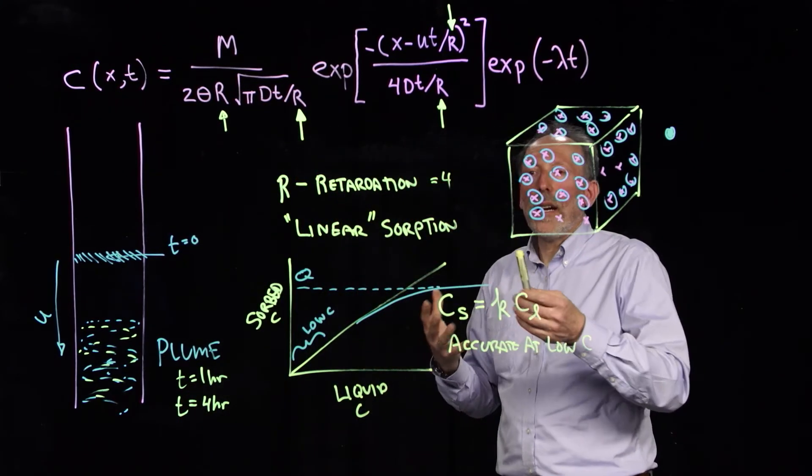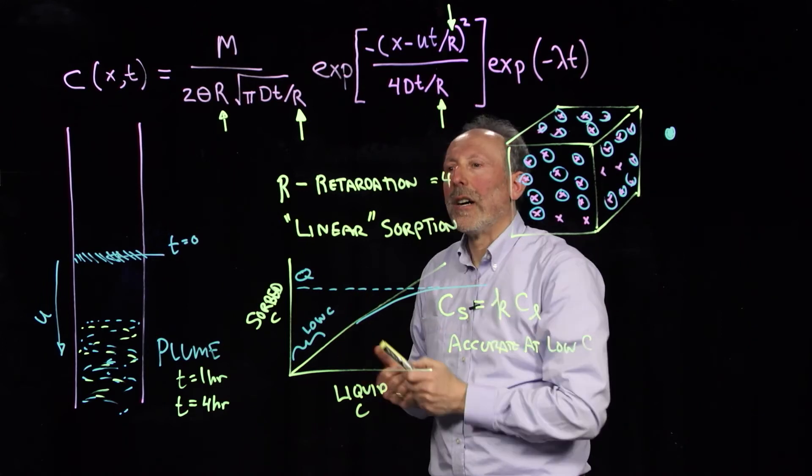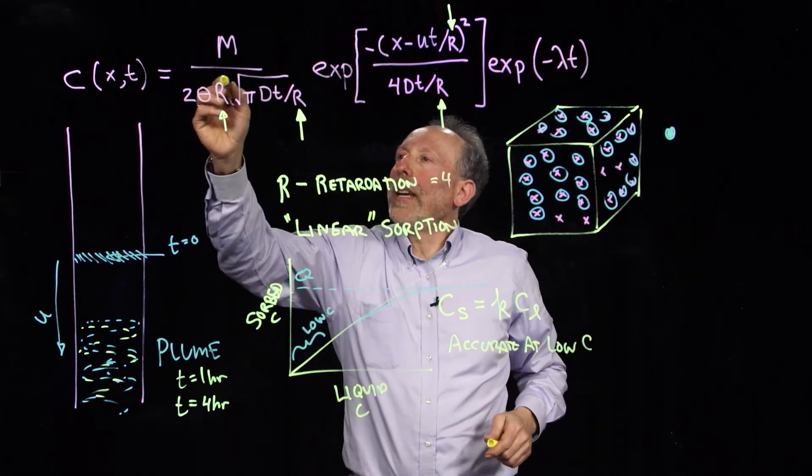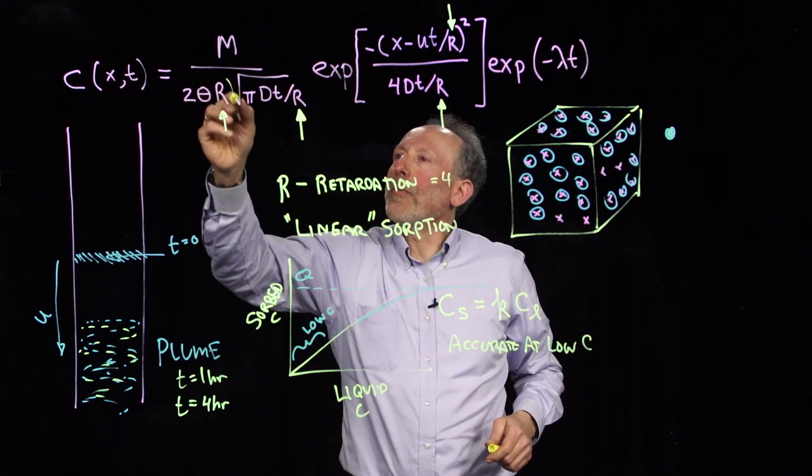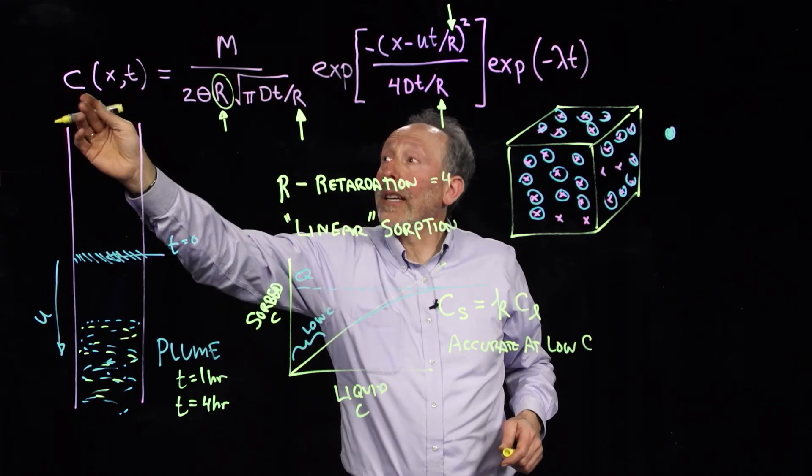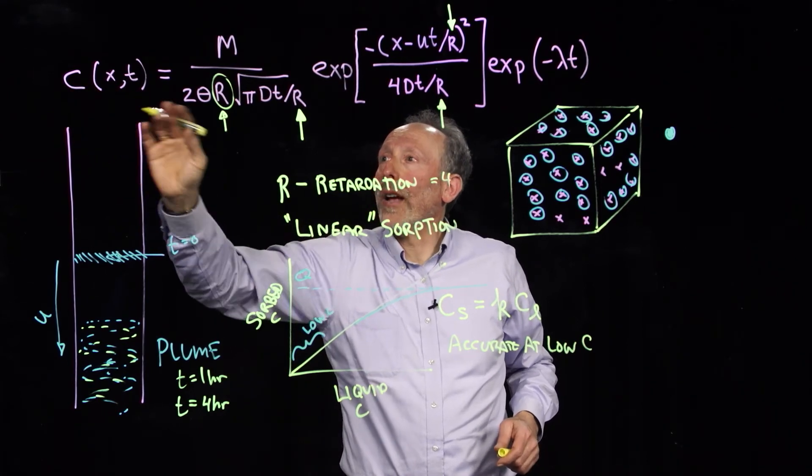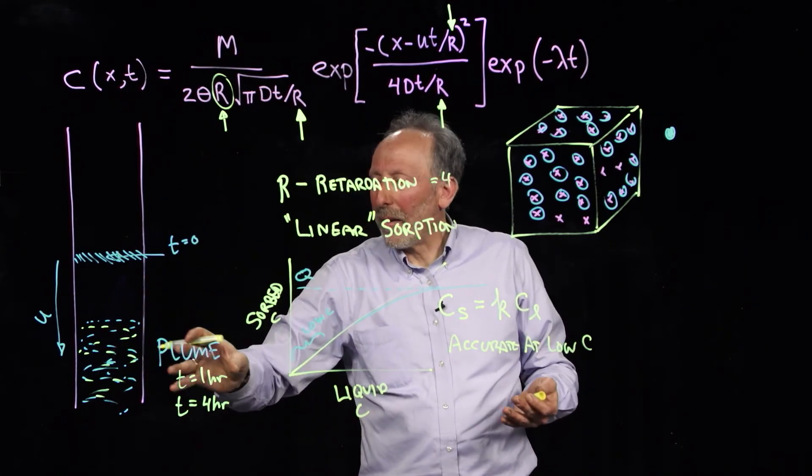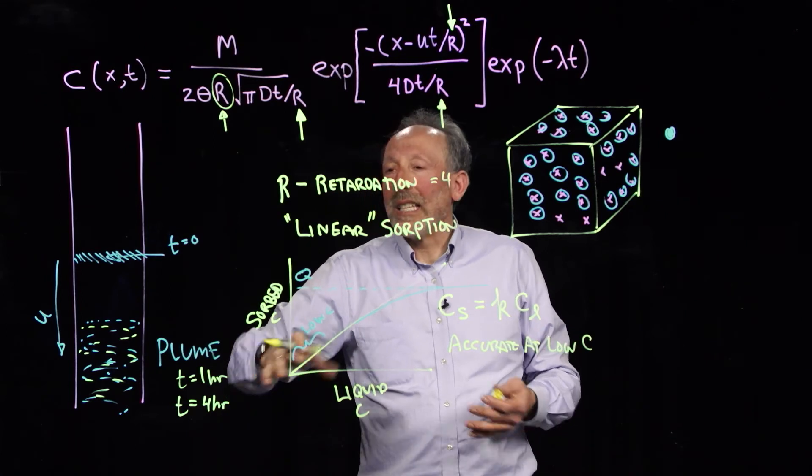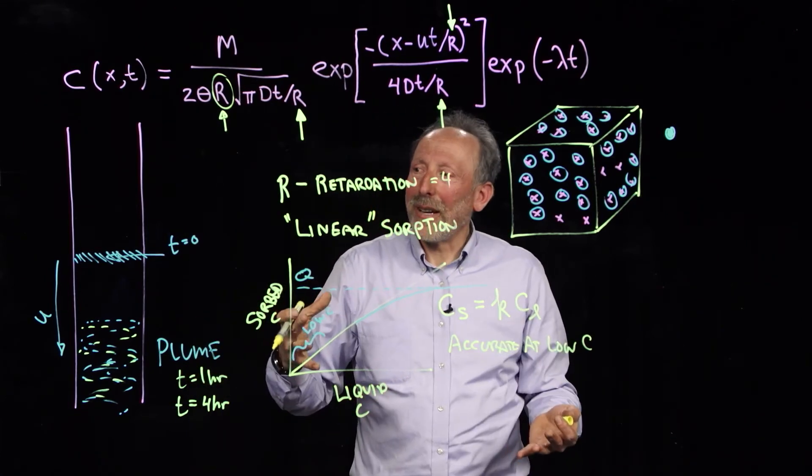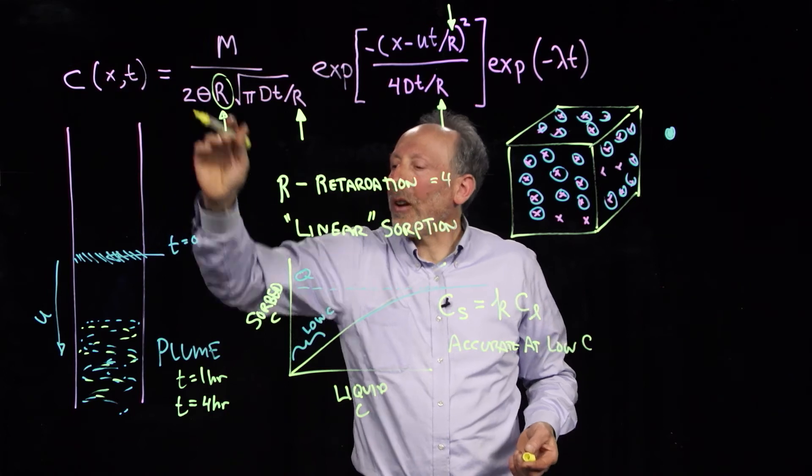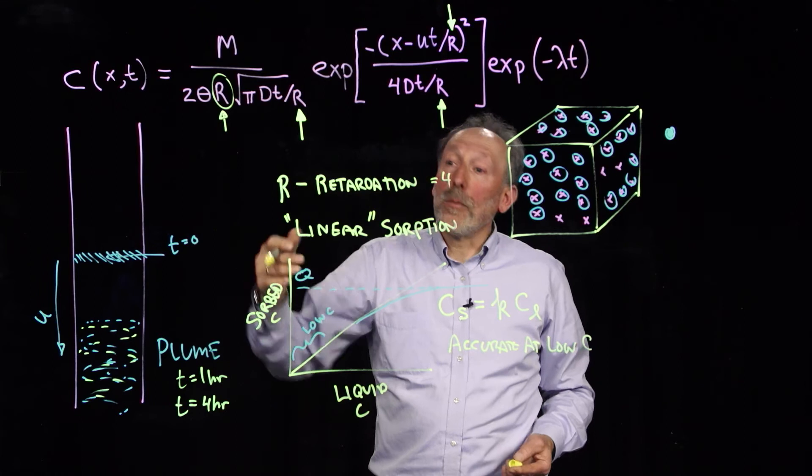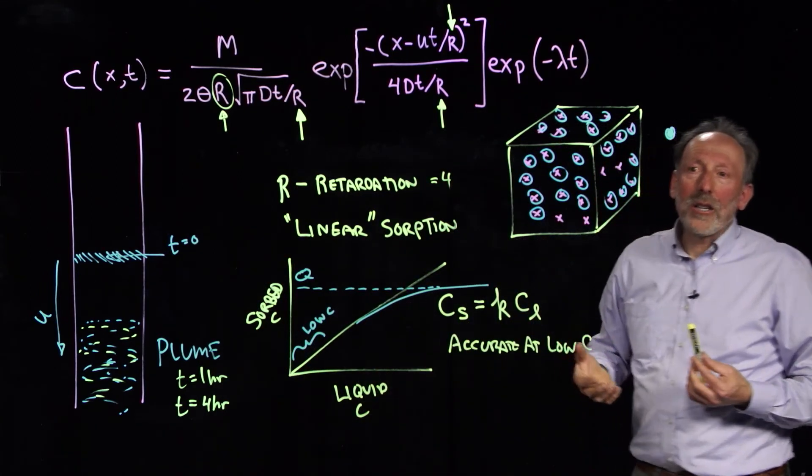So, the retardation really does just slow down the movement of the compound, and it's very predictable. And the other thing you'll see is that R here means that as retardation gets larger, the concentration in the liquid phase is smaller. Because four times as much now is absorbed to the solid than is in the liquid phase. So, the concentration follows the exact same pattern, the geometry's the same, but it'll have a lower concentration and it'll move more slowly. And that's why we call it the retardation factor.